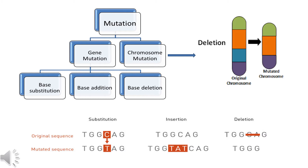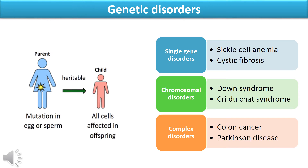The result of such genetic mutations is genetic disorders, of which there are three types. Single gene disorder means a single gene in the whole genome is affected; examples are sickle cell anemia and cystic fibrosis. Chromosomal disorders mean an entire chromosome is absent, an extra chromosome is present, or part of a chromosome is deleted or added; examples are Down syndrome and Cri-du-Chat syndrome. Complex disorders occur when multiple genes are mutated and environmental factors also influence the disorder; examples are colon cancer and Parkinson's disease.